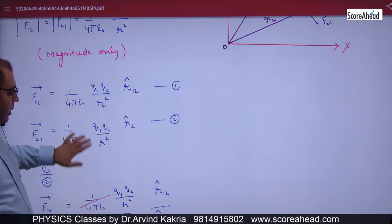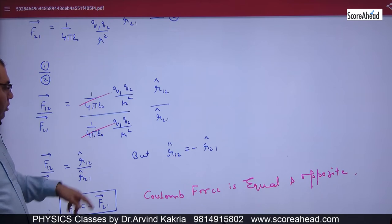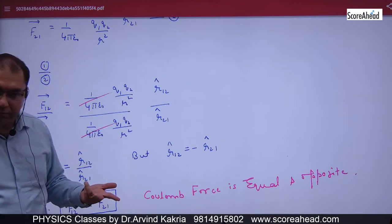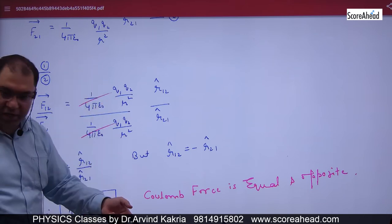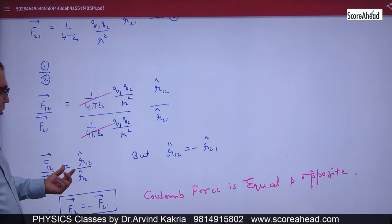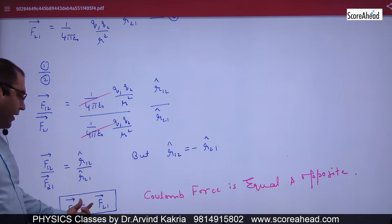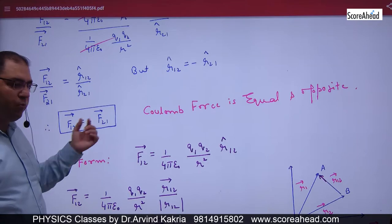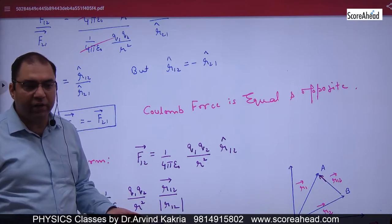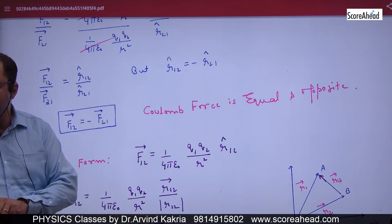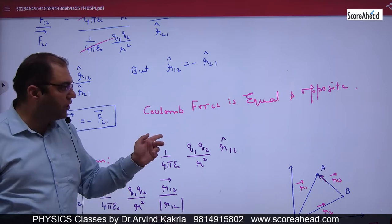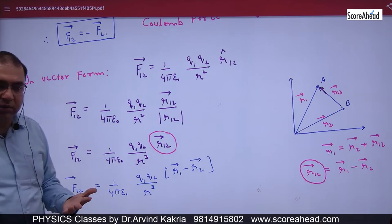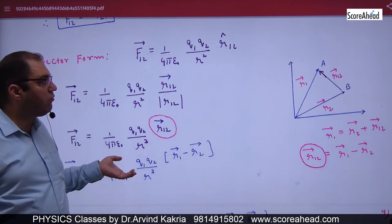If we compare R12 cap and R21 cap, their magnitudes are both 1, but their directions are opposite — one goes up and one goes down. So they are opposite to each other, meaning R12 cap equals minus R21 cap. Therefore, F12 vector equals minus of F21 vector. This proves that Coulomb's force is always equal and opposite.